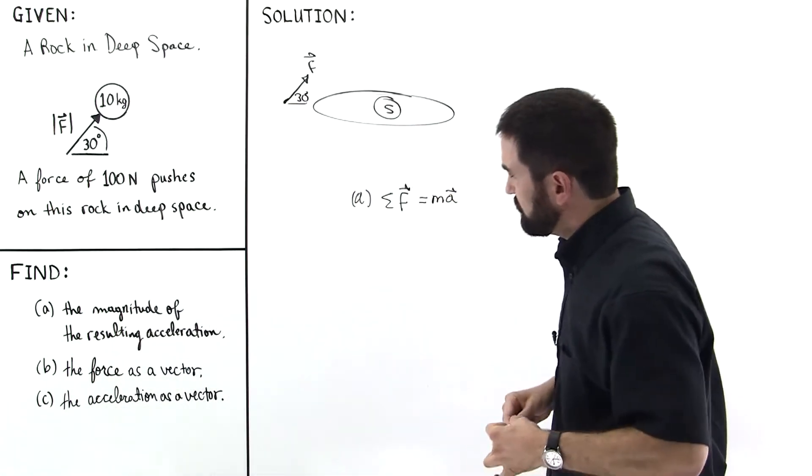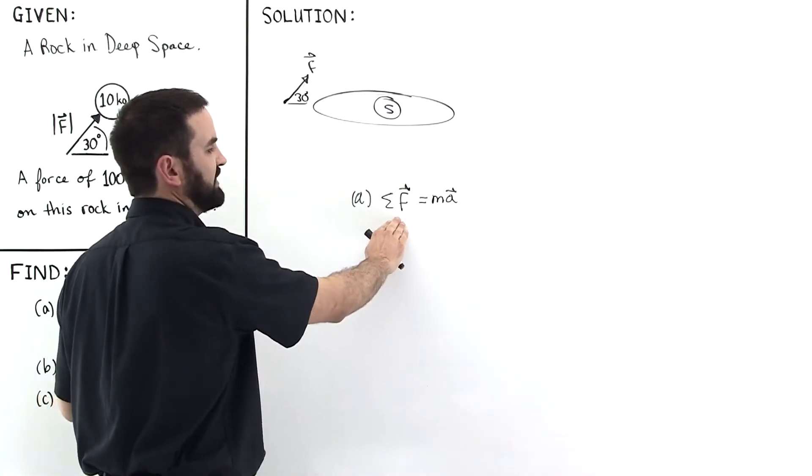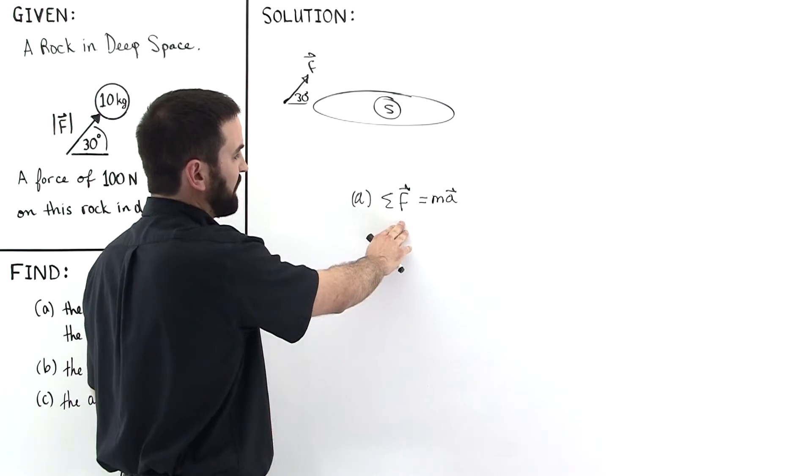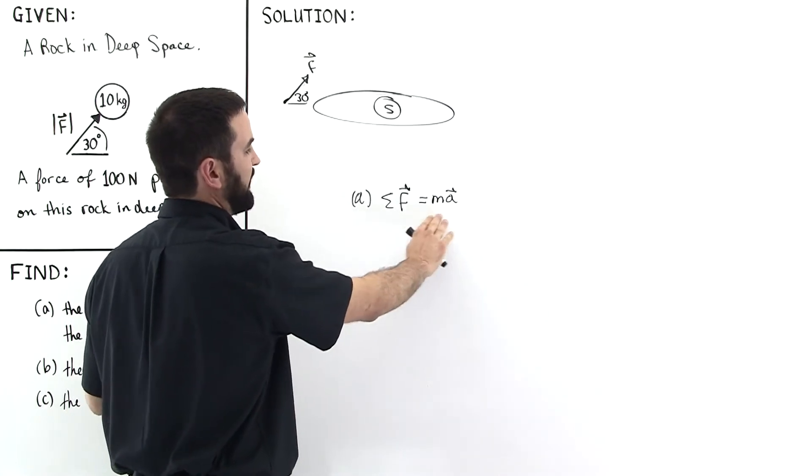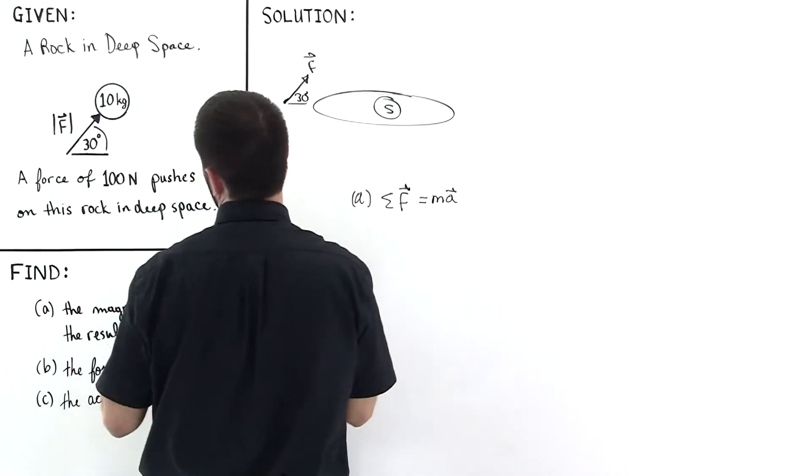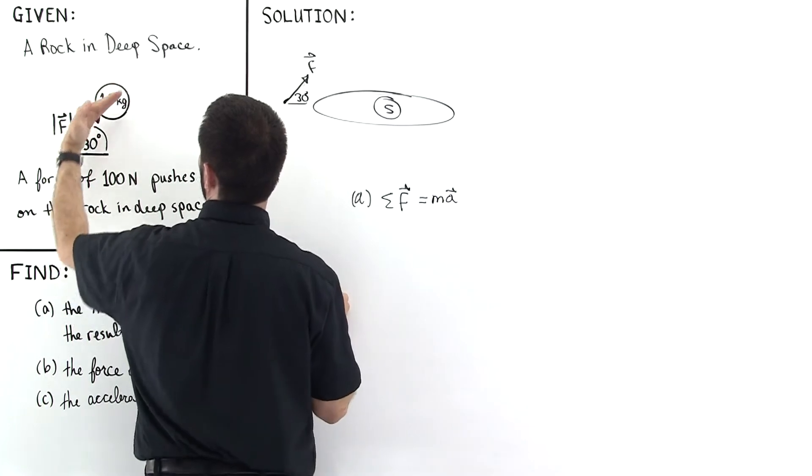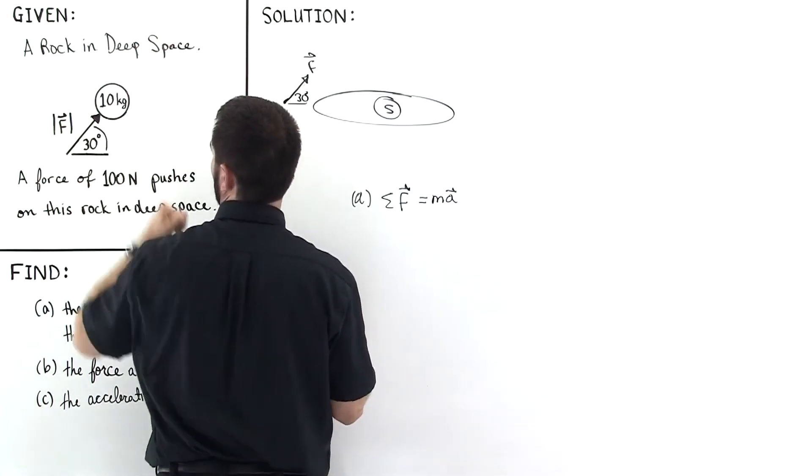What this says is that whatever the direction is of that net force, that is going to be in the same direction as the acceleration. That's why it's a vector equation like this. So if the force is in this direction, then the particle is going to be accelerated in that direction.